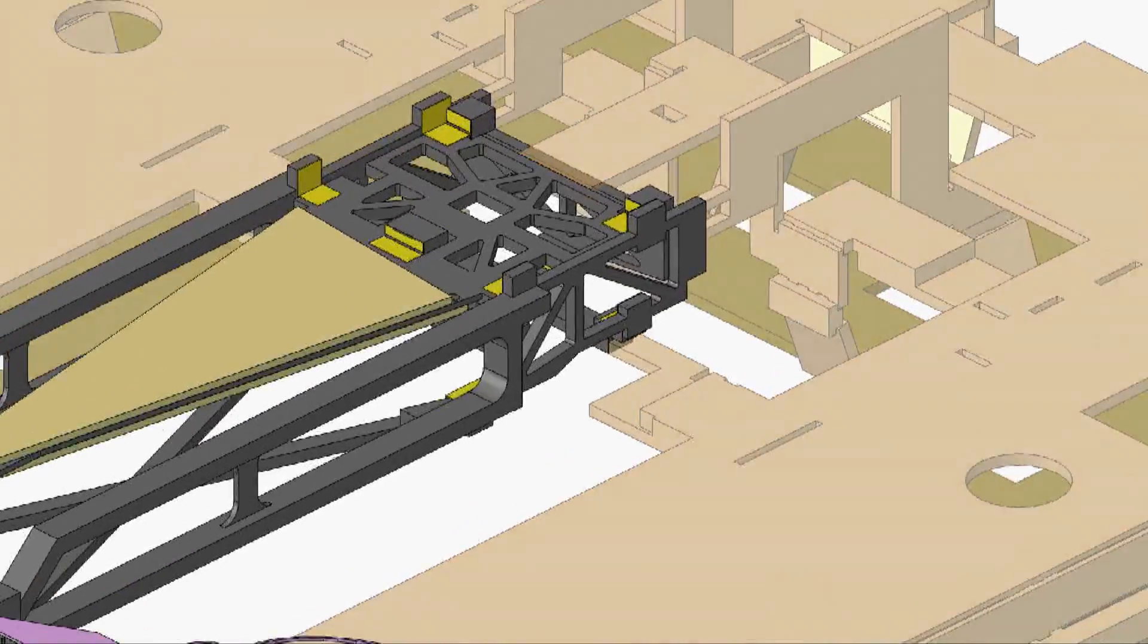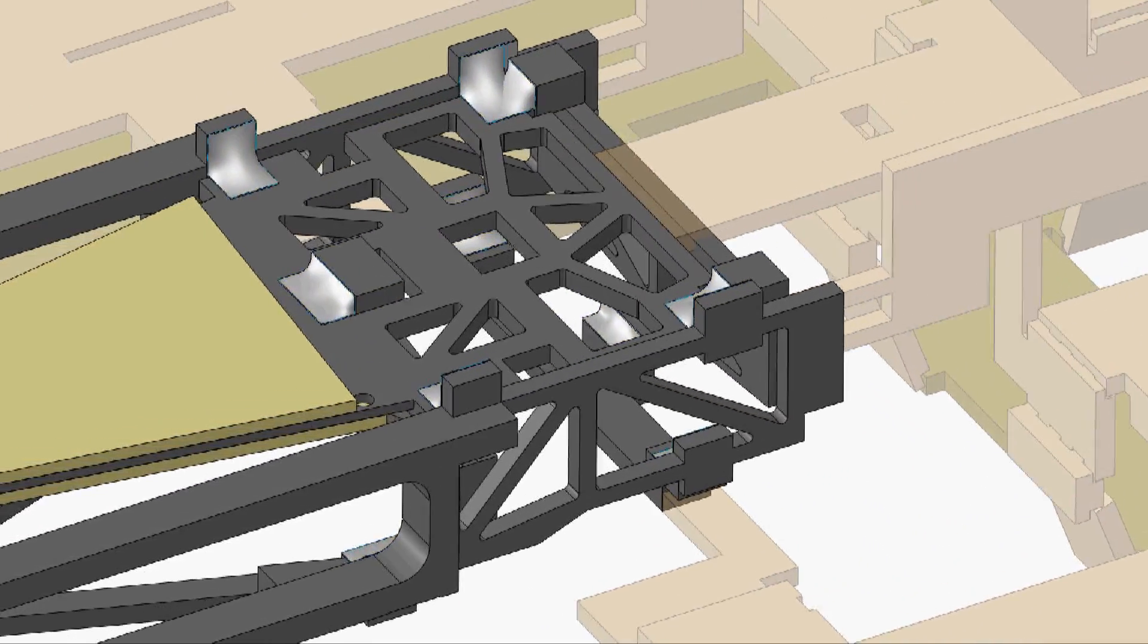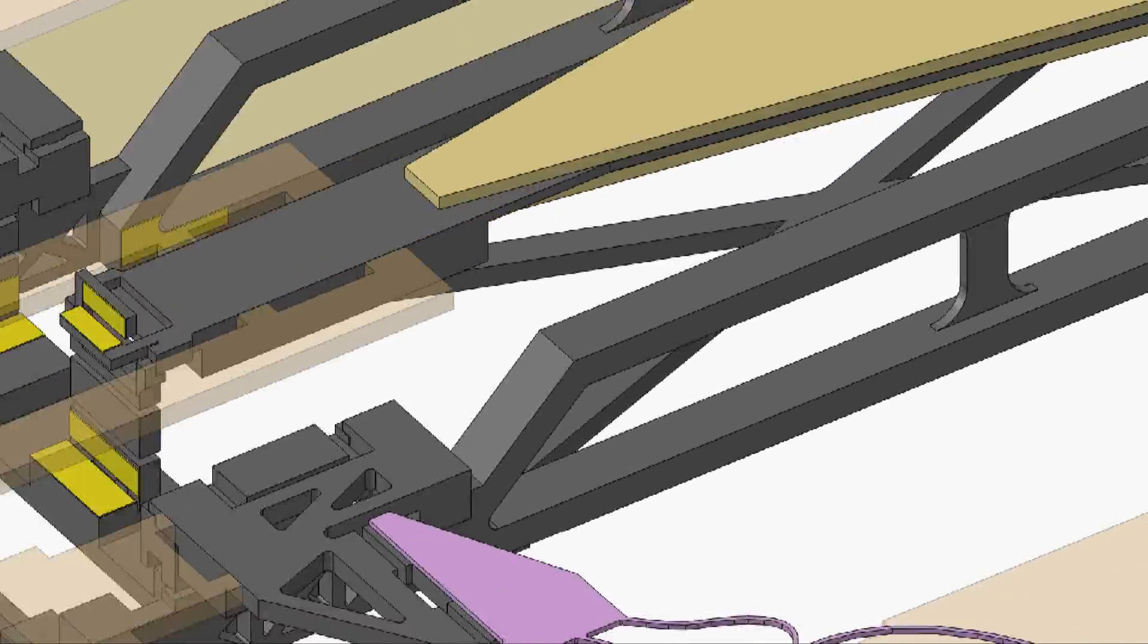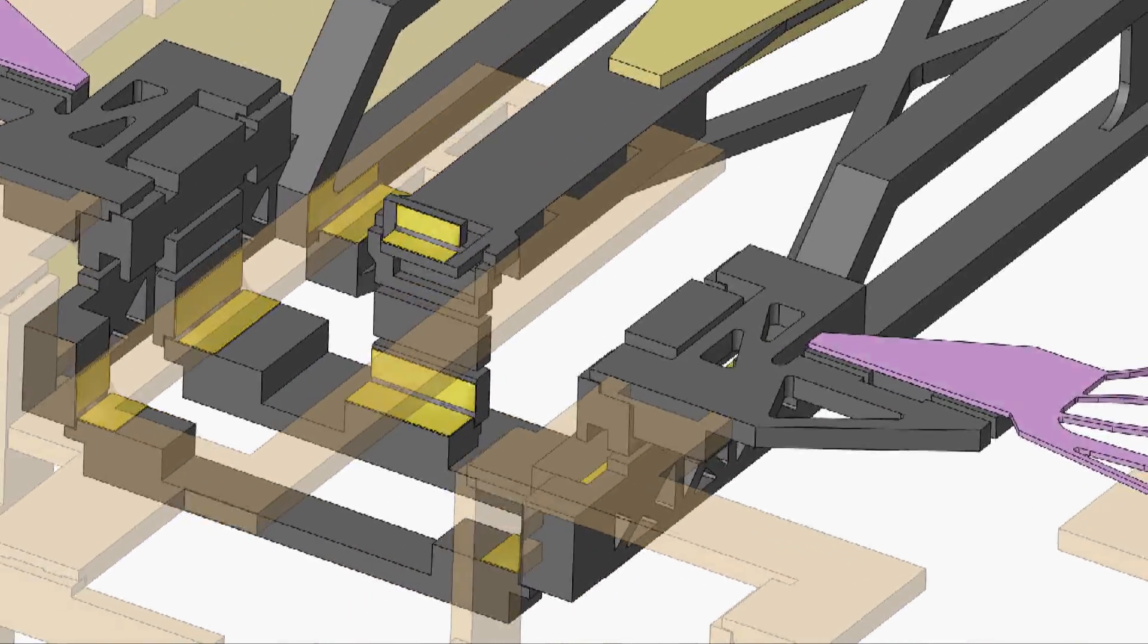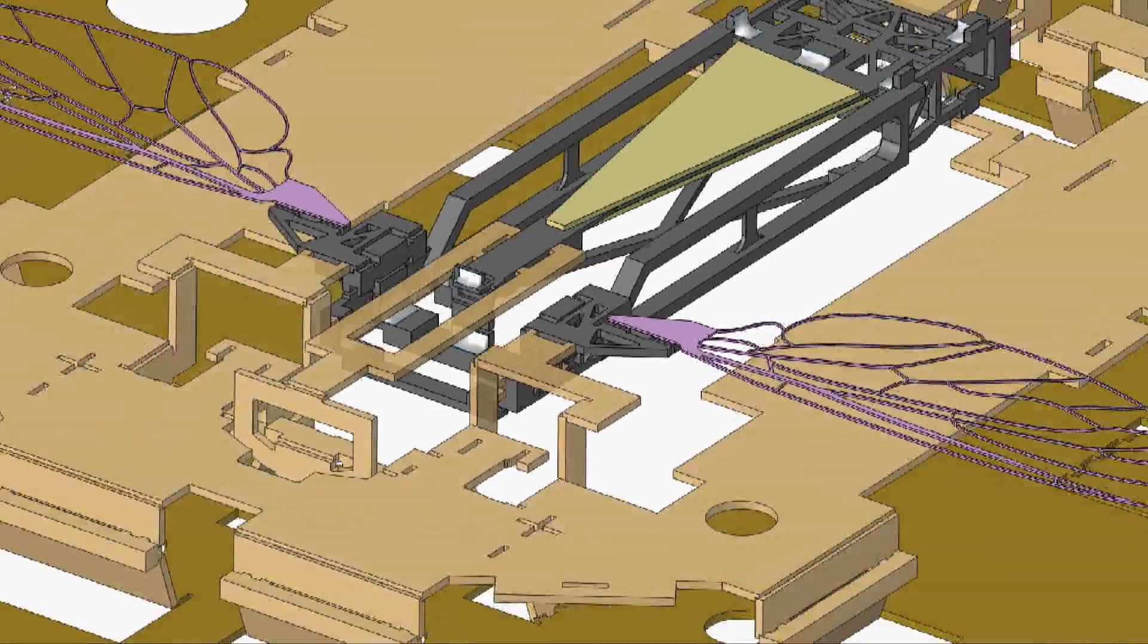The entire device is then immersed in a liquid metal solder, which bonds selectively to the brass pads. This locking process allows Mobi to be removed from the assembly scaffold without unfolding.